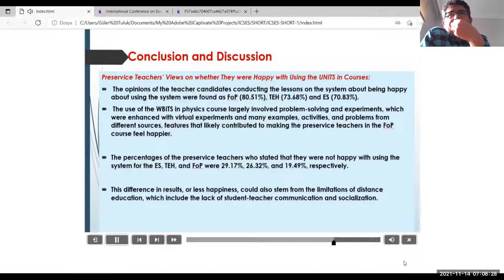The use of the WBITS in physics course largely involved problem solving and experiments, which were enhanced with virtual experiments and many examples, activities, and problems from different sources, features that likely contributed to making the preservice teachers in the FOP course feel happier. The percentages of the preservice teachers who stated that they were not happy with using the system for the S, TEH, and FOP were 29.17%, 26.32%, and 19.49%, respectively. This difference in results, or less happiness, could also stem from the limitations of distance education, which include the lack of student-teacher communication and socialization.